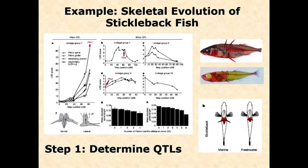Step one: locate the QTL. We breed the divergent lines, measure phenotype, look at genetic markers, and search for correlations. They identified 10 significant linkage groups — regions with significantly elevated association scores. One was incredibly significant, scoring around 80, while others scored four, five, or eight. They were measuring multiple components of the spine: the ascending branch, the pelvic girdle — different structural measurements.